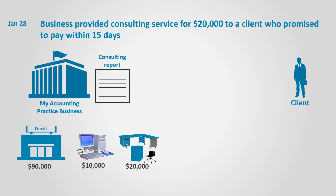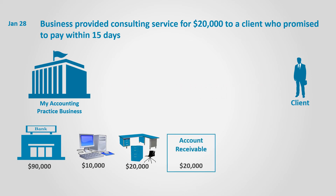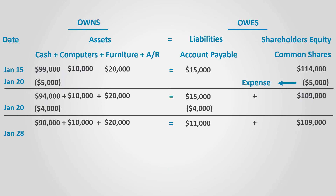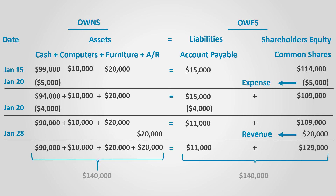On January 28th, the business provided consulting services for a client for $20,000. However, the client promised to pay within 15 days. The business now owns a promise to receive $20,000 from the client — that is what we call accounts receivable. Remember that receivables are assets. Assets increased by $20,000 in the form of accounts receivable, and since the business provided services this is regarded as revenue. Revenue increases shareholders' equity, so shareholders' equity increases by $20,000 as well.